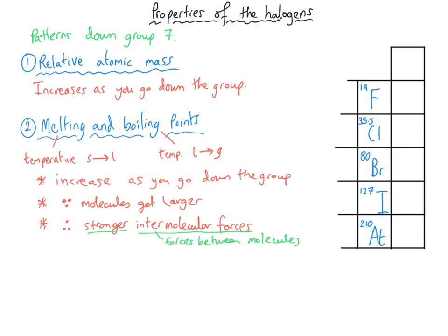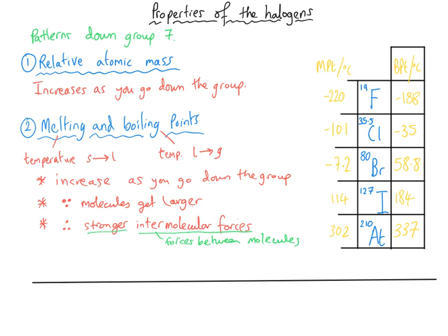I want to show you the melting and boiling points because they explain one extra fact about group 7 elements. If we use a number line with 0°C and 20°C (room temperature), we can see: fluorine's melting point is -220°C and its boiling point is -188°C, so at room temperature fluorine is a gas. Chlorine's melting point is -101°C and its boiling point is -35°C, so at room temperature chlorine is also a gas.